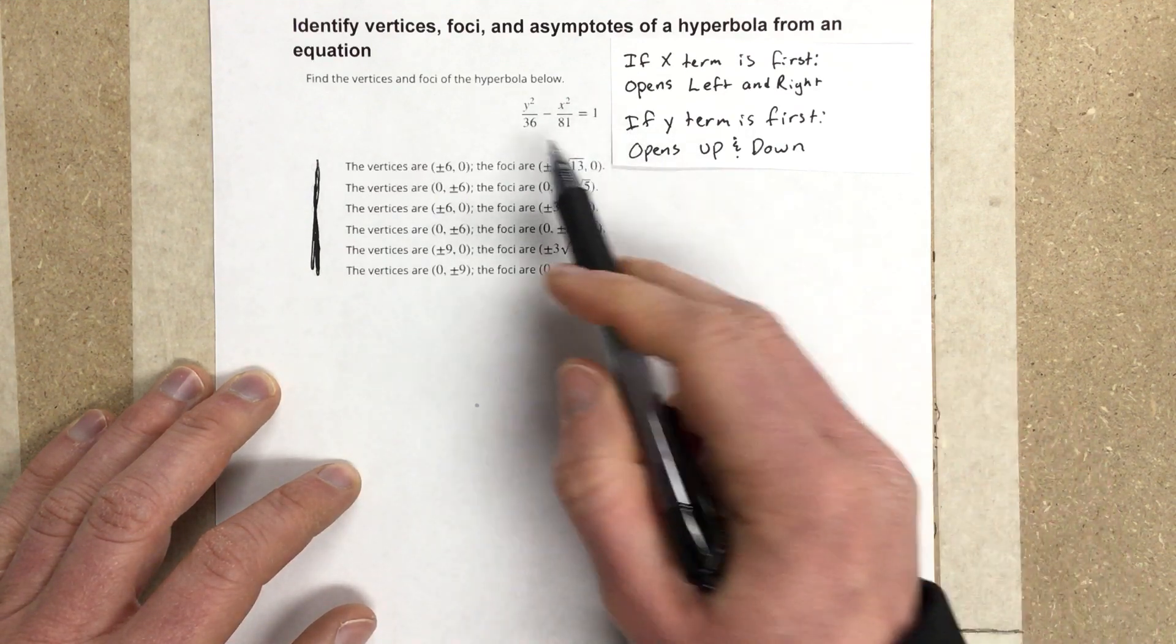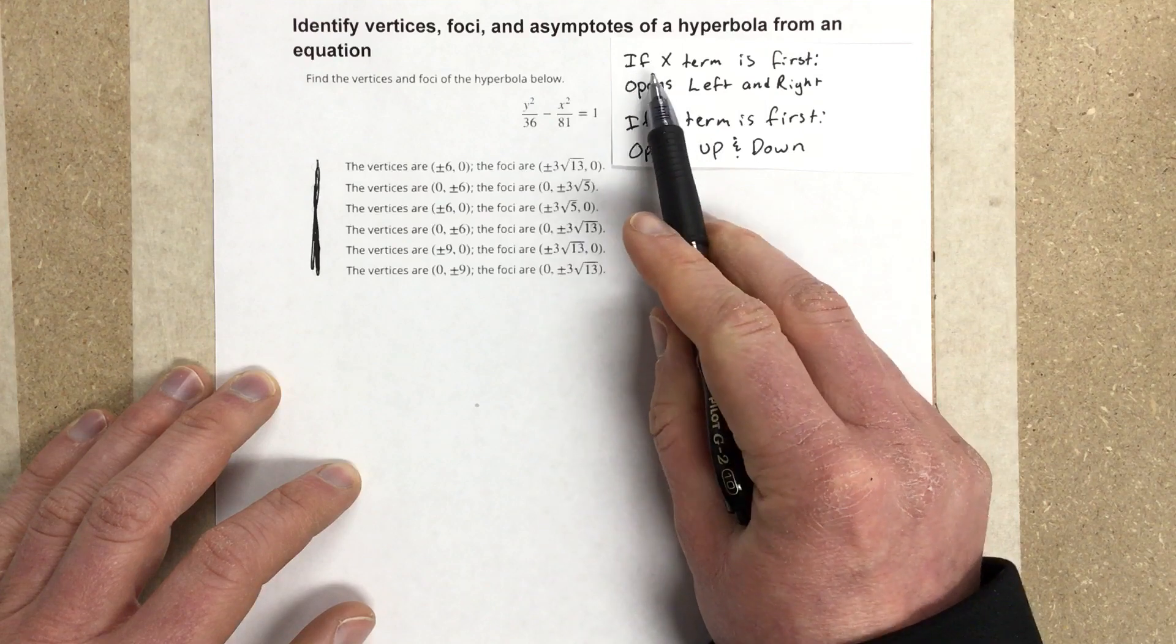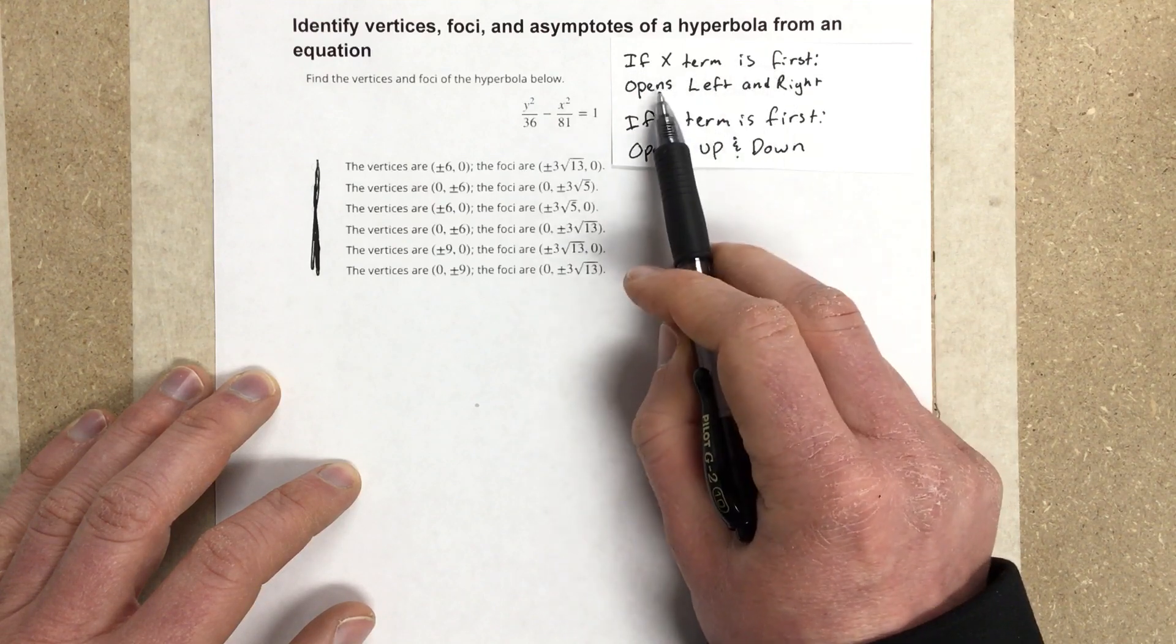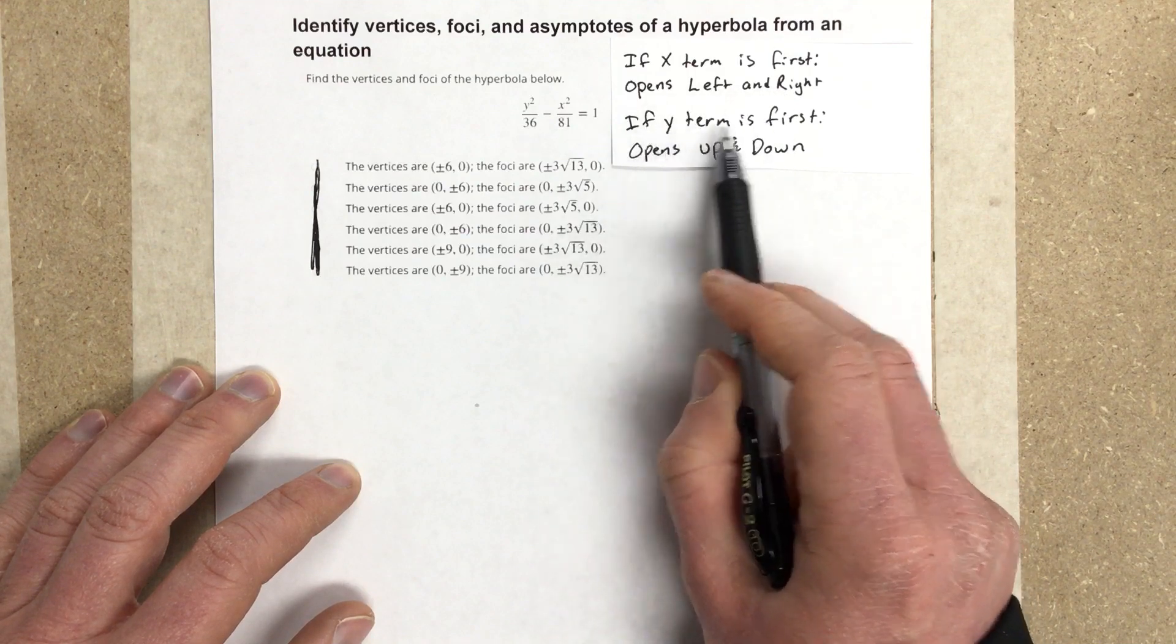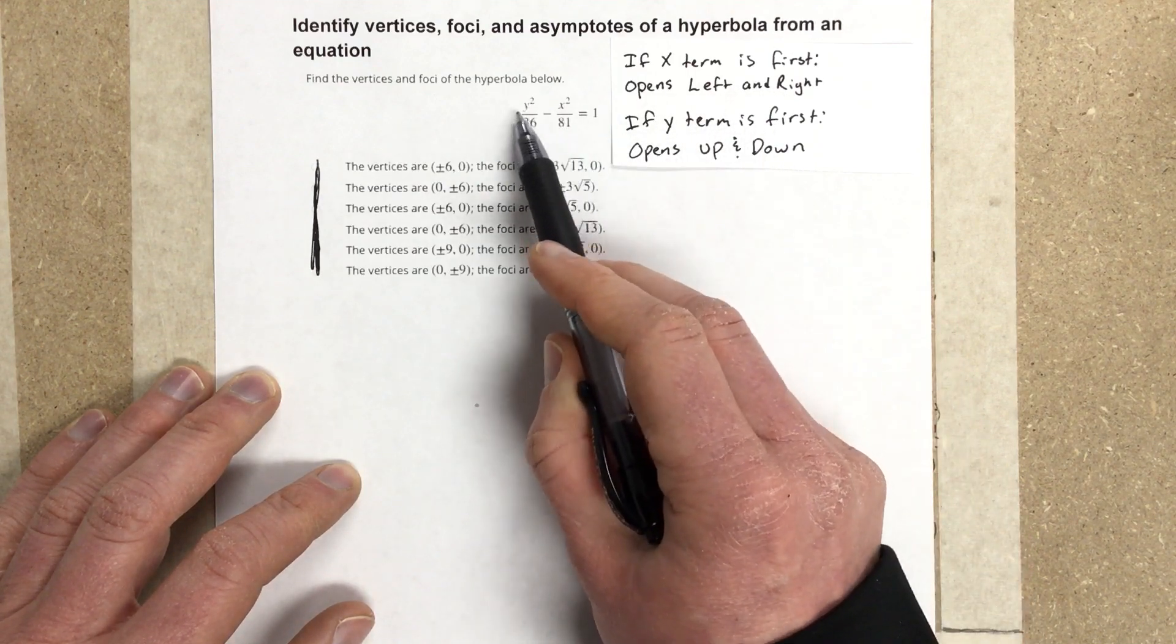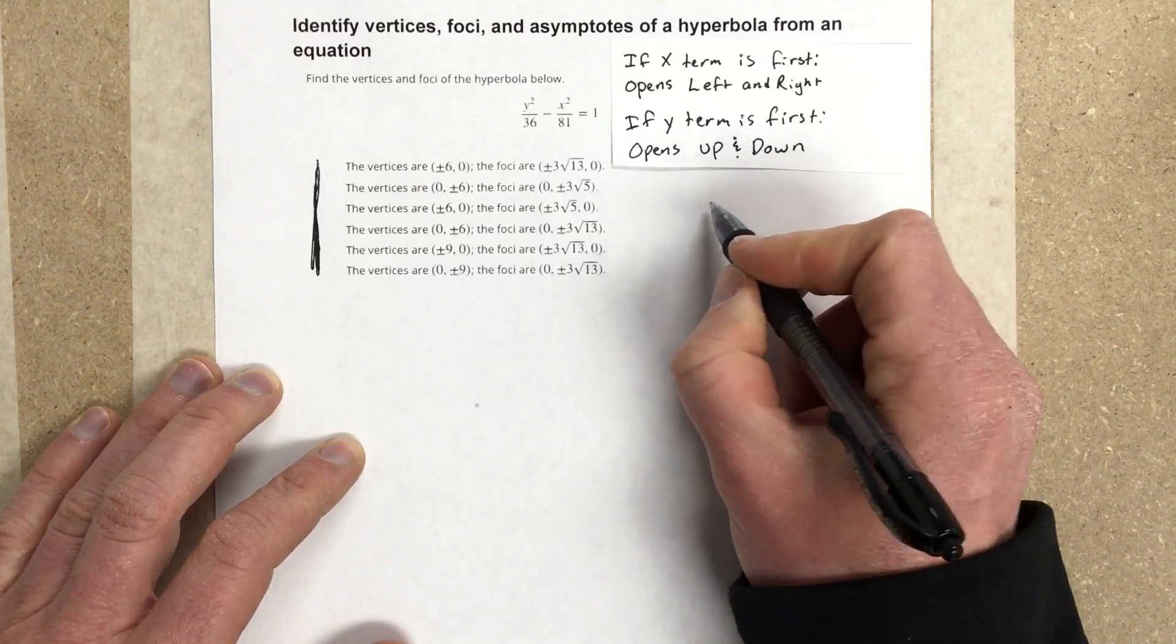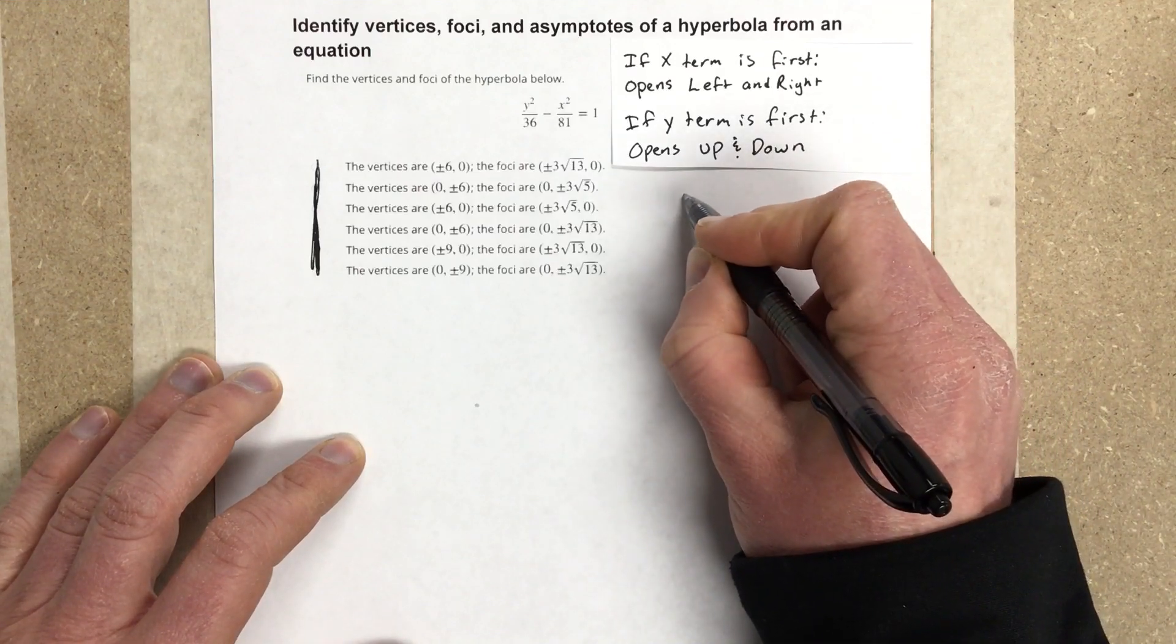What we're going to do is notice that if the x term is first, this thing would open left and right. If the y term is first, it opens up and down. We do have the y term being first here, so we have this scenario now, which is different than our last example.